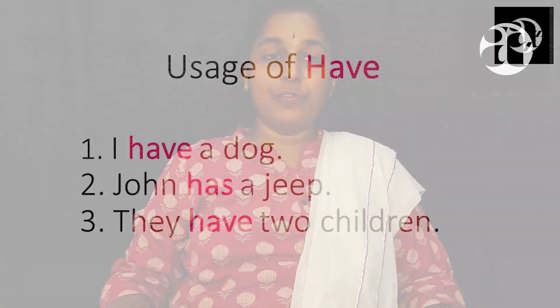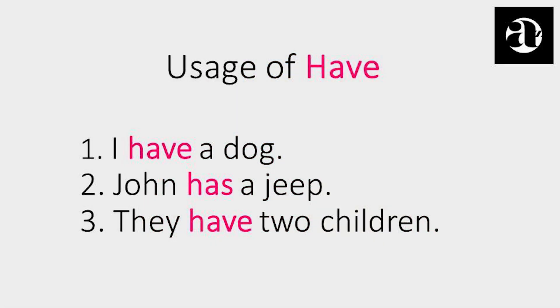Have and having are both derived from the verb 'to have' but they cannot be used interchangeably. Have is a primary auxiliary verb, used as the main verb or standalone verb in sentences to indicate possession or ownership. For example: I have a dog. John has a jeep. They have two children. In these sentences, have and has are used as the main or standalone verb to indicate possession or ownership.